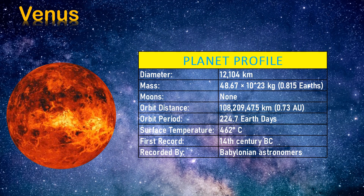As we learned about Mercury's profile, here we have Venus with its profile. The diameter of Venus is 12,104 kilometers. The mass is 48.67 × 10²³ kilograms. It has no moons. The distance from the sun is 10 crore 82 lakh 9,475 kilometers. The orbit period is 224.7 Earth days. The surface temperature of Venus is 462 degrees Celsius. It was first recorded in the 14th century BC by Babylonian astronomers.